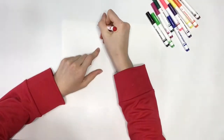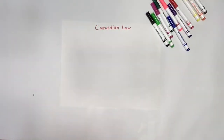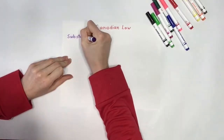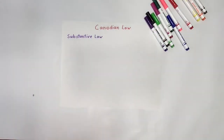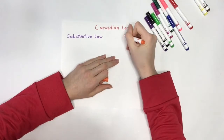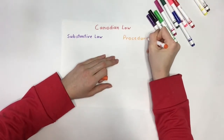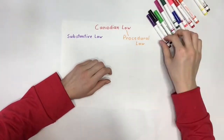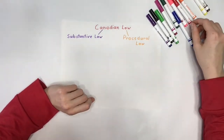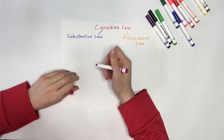Canadian law is split into branches. The first branch is substantive law, which lists the rights, duties, and obligations of each person within Canadian society. The other branch is procedural law. This is the process of law and outlines the steps involved in protecting the rights given under substantive law. It explains how police, court systems, and the government are meant to work.